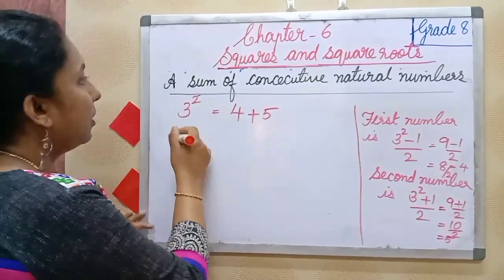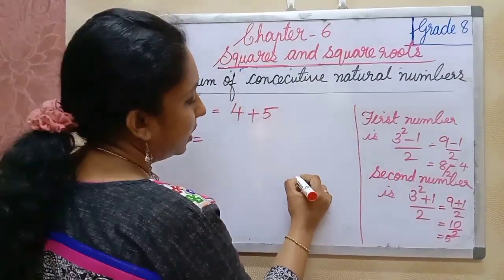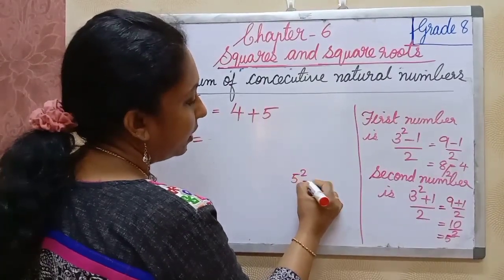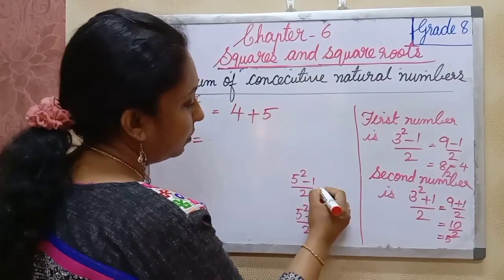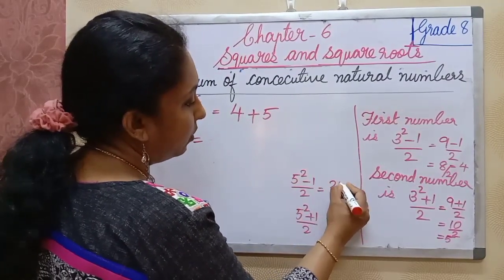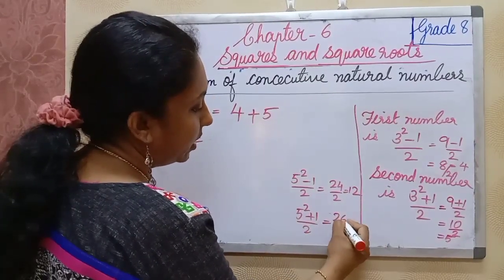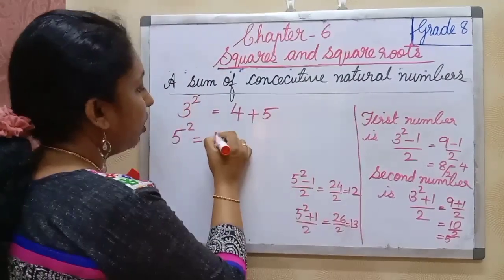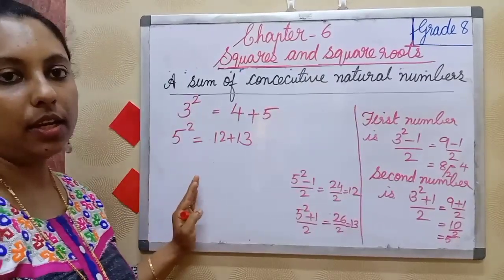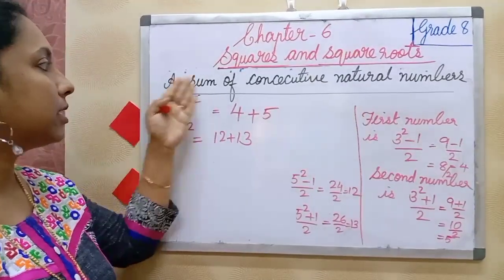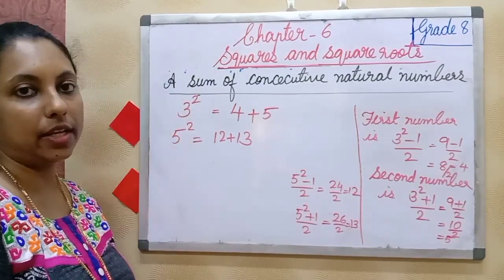One more example: 5 square. The first number is (5 square minus 1) by 2, which is (25 minus 1) equals 24 by 2 equals 12. The second number is (5 square plus 1) by 2, which is 26 by 2 equals 13. So 12 plus 13 equals 25, which is 5 square. This way we can express a square number as the sum of two consecutive natural numbers.